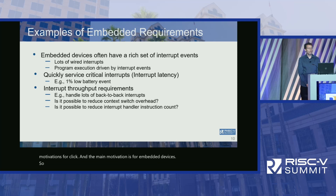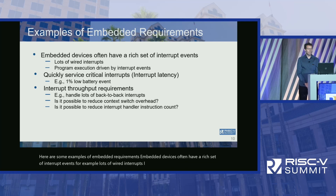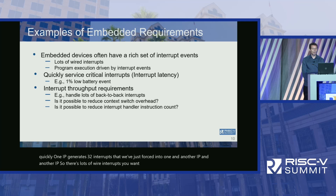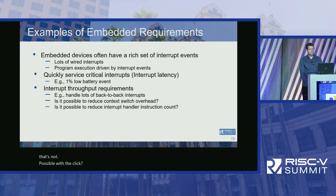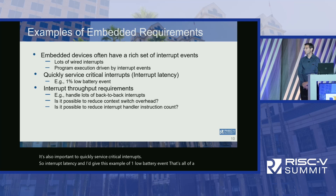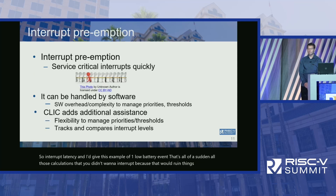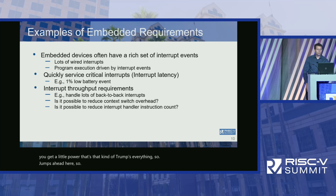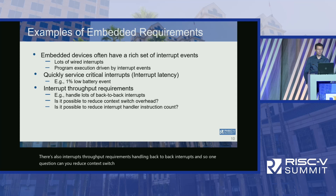Embedded devices often have a rich set of interrupt events — lots of wired interrupts. In some SoCs, one IP generates 32 interrupts that get forced into one signal. If you want to send them directly to the core, that's now possible with CLIC. It's also important to quickly service critical interrupts. For example, a 1% low battery event suddenly trumps all ongoing calculations. There are also interrupt throughput requirements for handling back-to-back interrupts. The key questions are: can you reduce context switch overhead, and can you reduce the interrupt handler instruction count?